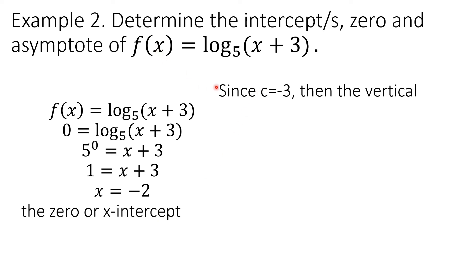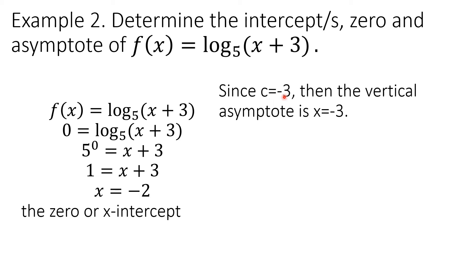Since the value of c is equal to negative 3, the vertical asymptote is x equals negative 3. Recall that the function is written in the form f(x) = log_b(x − c), so the value of c is negative 3, coming from x minus (negative 3). The graph will approach and approach the line x equals negative 3, which is a vertical line passing through the x-axis at negative 3.